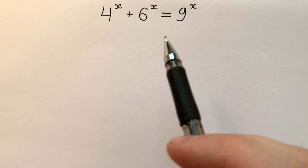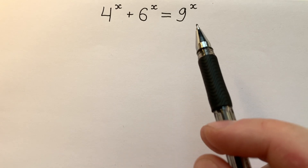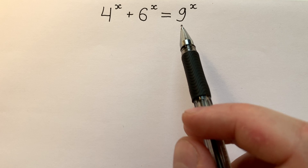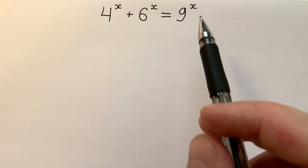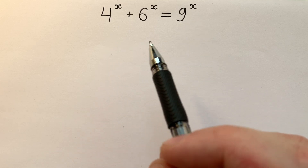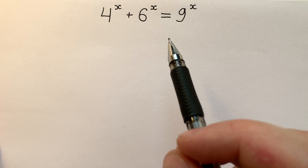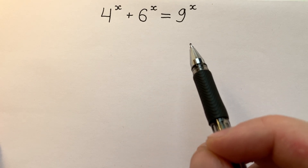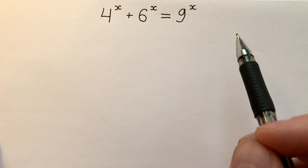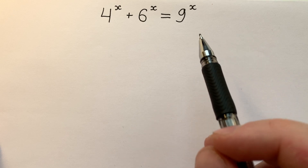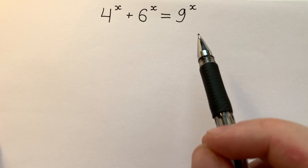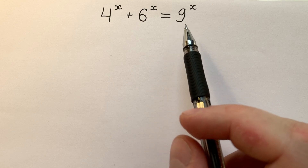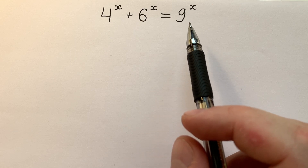We could solve this equation instantly if we only just had 10 to the power of x at the right side of this equation. In that case we could say that x equals 1 and then prove that this solution is the one and only one. But we have what we have: 9 to the power of x.